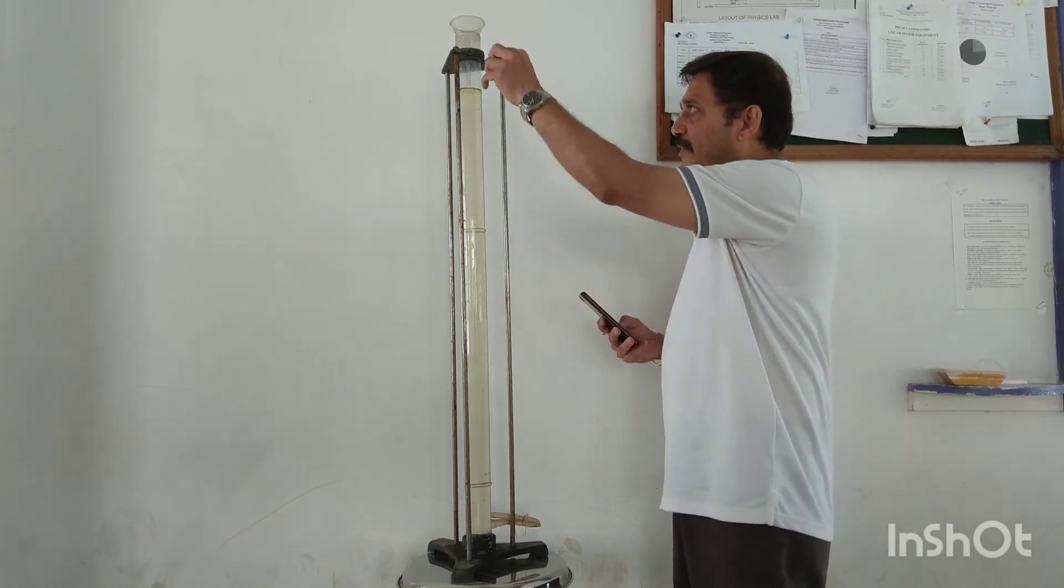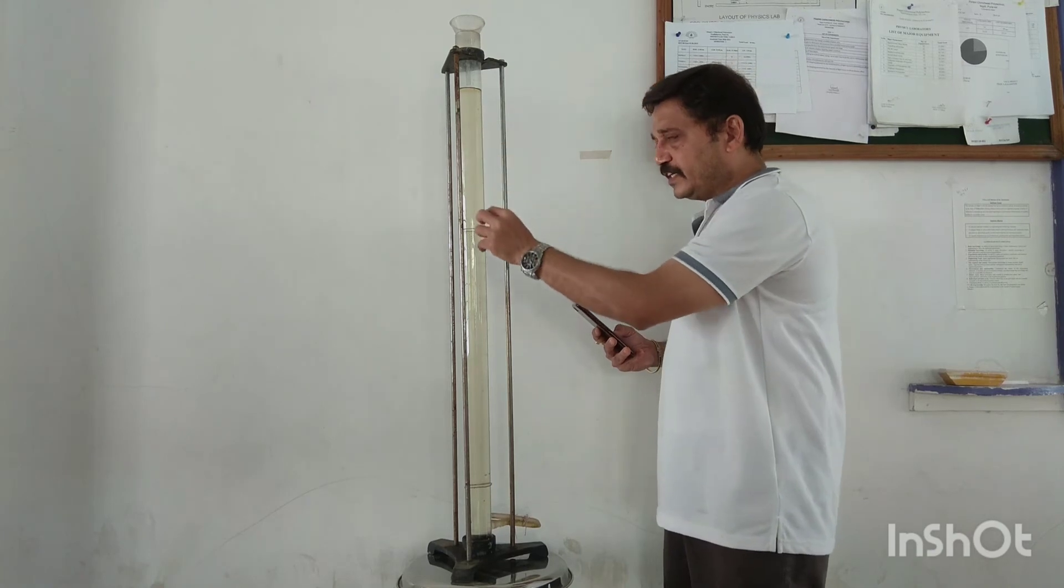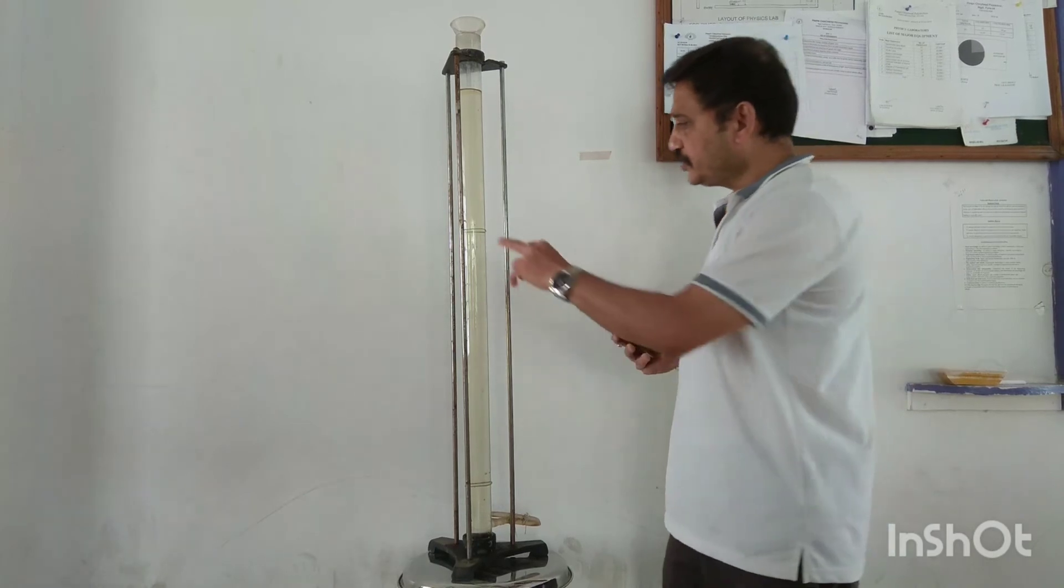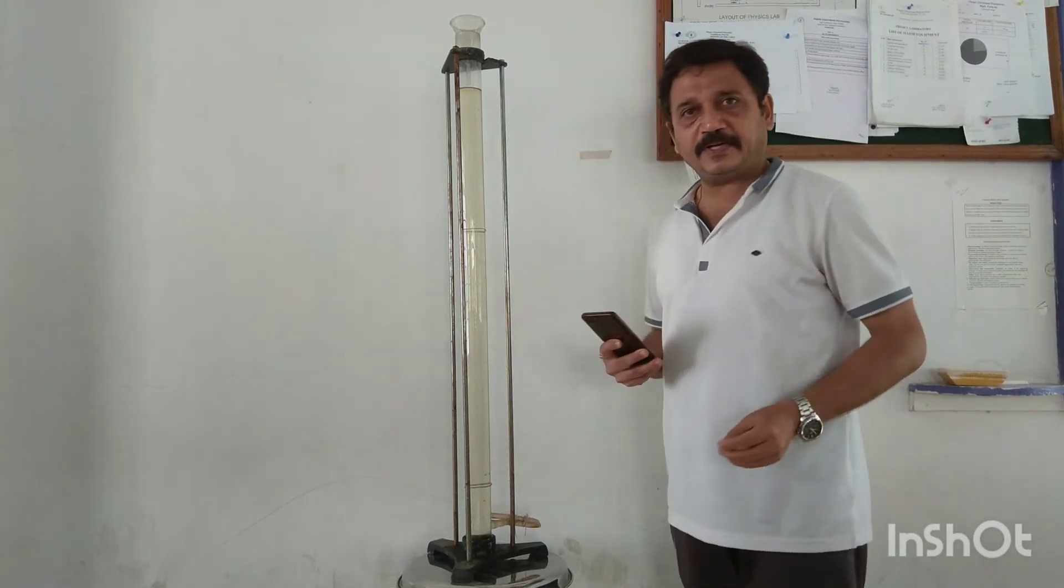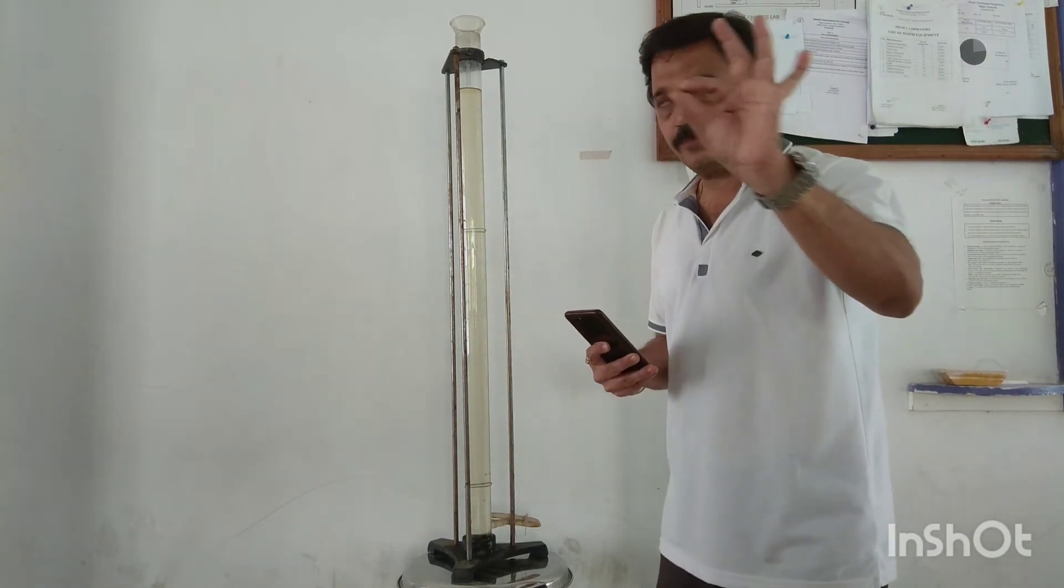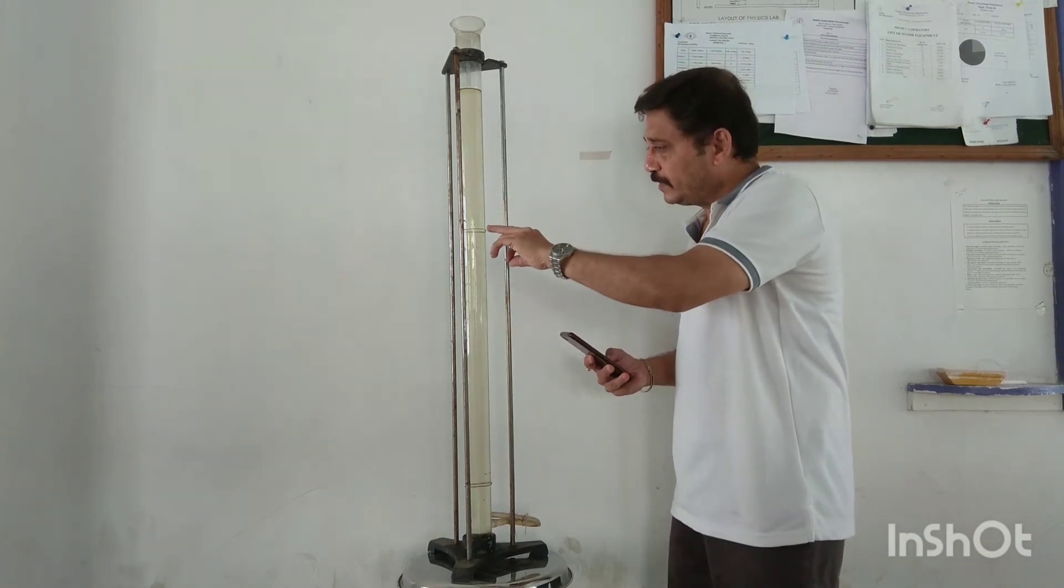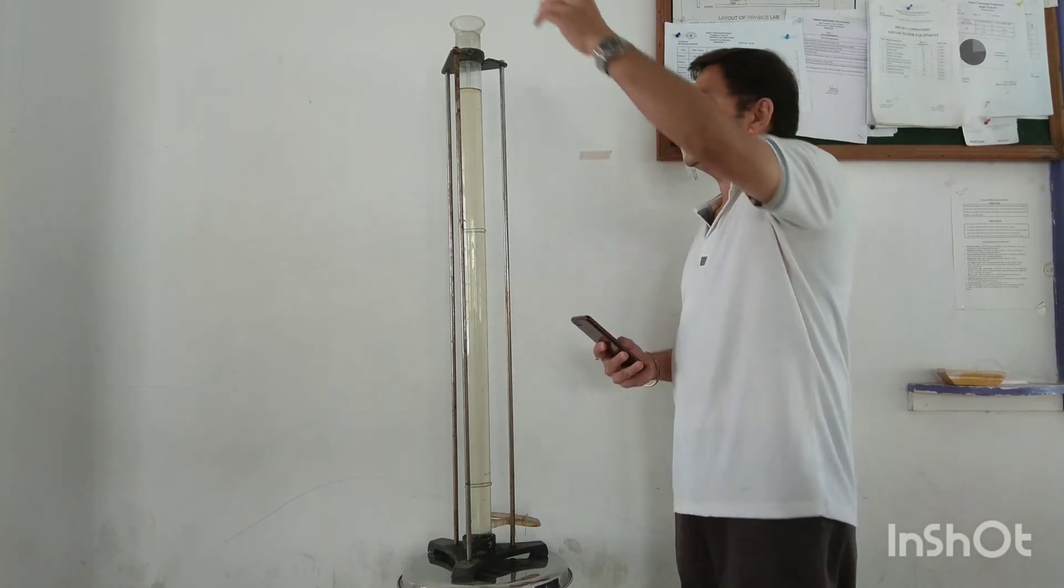The reason is that when the metal sphere falls, after covering a certain distance, it attains a constant speed—that is the terminal velocity. Now, distance between A and B is 50 cm. This is the metal sphere. I am going to drop it from here and record the time for the metal sphere to travel from here to here. OK, now let's start.